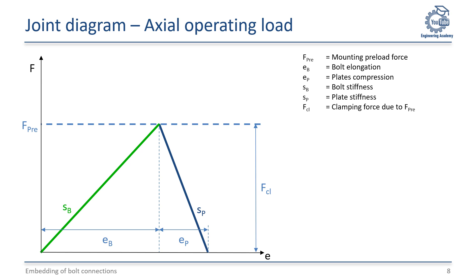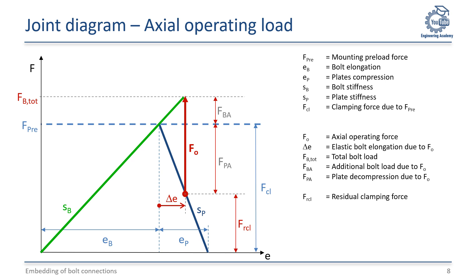Let's now have a look at a joint diagram under the effect of an actual operating load FO. The additional elongation delta E, caused by the operating force, increases the bolt force to the new level FB total. As a result, the clamping force within the plates decreases by the amount FPA, so that only a reduced residual clamping force FRCL remains in the joint.